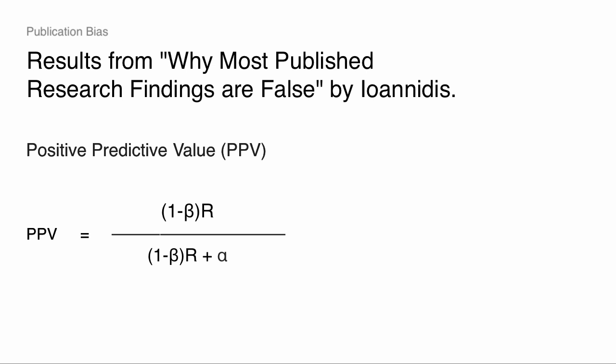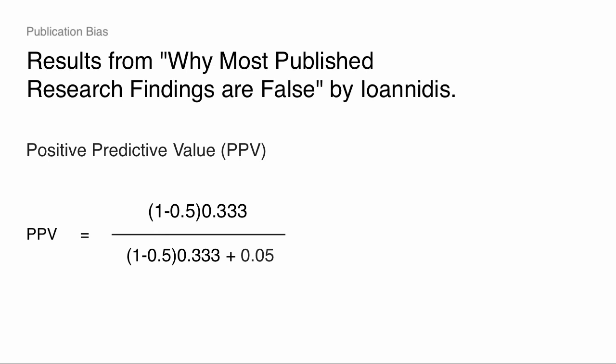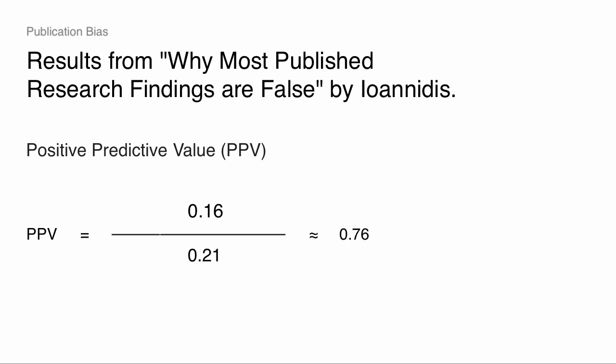It's worth staring at this and thinking about what beta, R, and alpha usually are. Alpha is usually 0.05. Think of your favorite literature — let's start with some underpowered field experiments in development economics. Let's say beta is 0.5 for some underpowered studies, and maybe five out of 20 possible interventions had some effect, so R is one-third. The PPV is 0.5 times one-third — about 0.16 — divided by 0.16 plus 0.05, giving 0.16 over 0.21. So roughly 70% of significant results in that literature are probably real, and maybe a quarter are false positives.